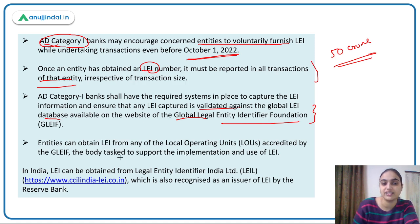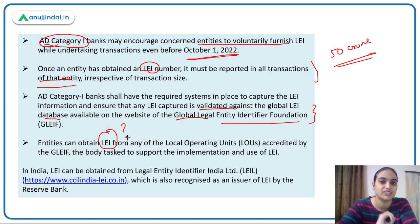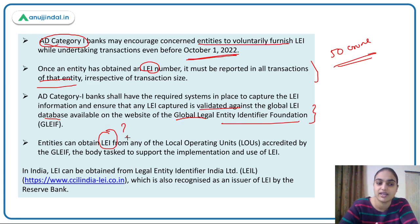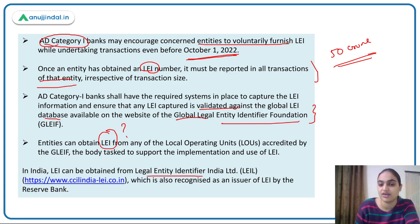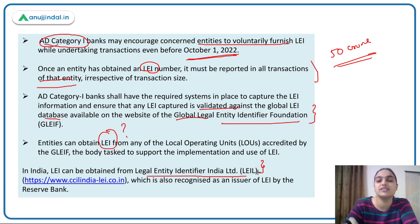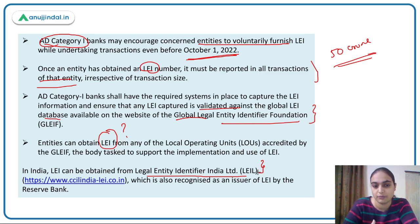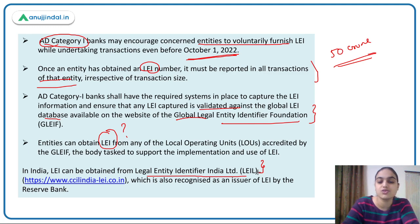If an entity needs to obtain an LEI number — because its transactions are of 50 crore or more — it can get it from Legal Entity Identifier India Limited. This is an RBI-recognized firm that issues LEIs in India. Any firm wanting to get this identification number issued can approach this firm.